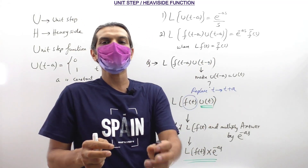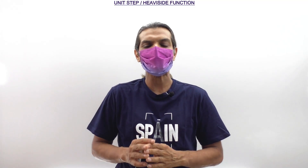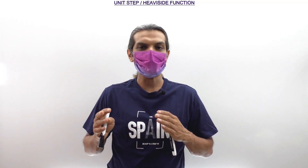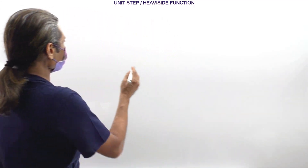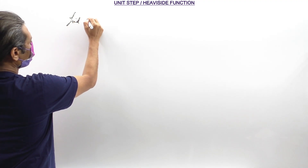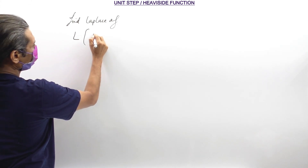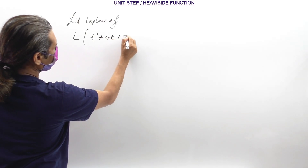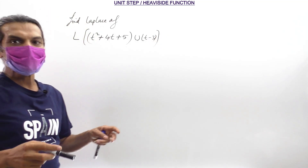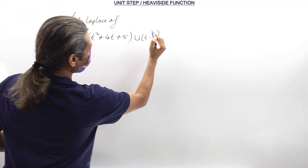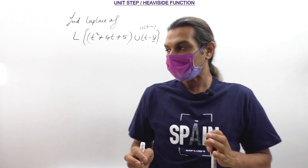I will explain how this property works with a simple problem, then we will move to higher-level exam problems. To understand the second property — Laplace of F(t − A) · U(t − A) = e^(−As) · F(s) — let's evaluate: Laplace of (t² + 4t + 5) · U(t − 3). This involves a unit step function because we have U(t − A) with A = 3, so this is property number 2.